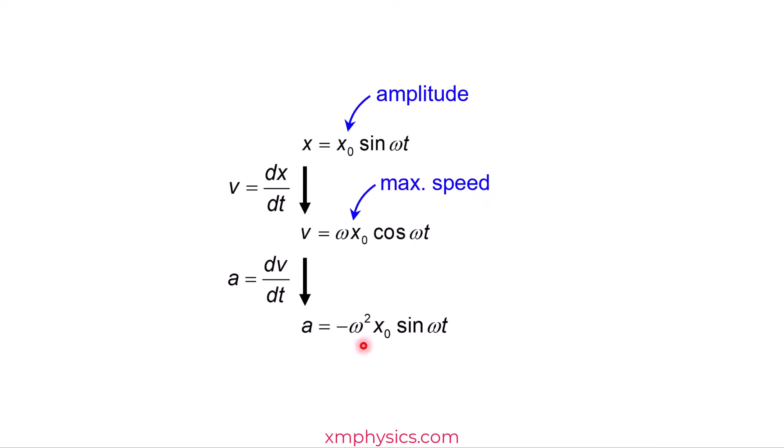So same trick here. So acceleration varies between negative omega squared X naught and omega squared X naught, and therefore, omega squared X naught is the maximum acceleration of an SHM.